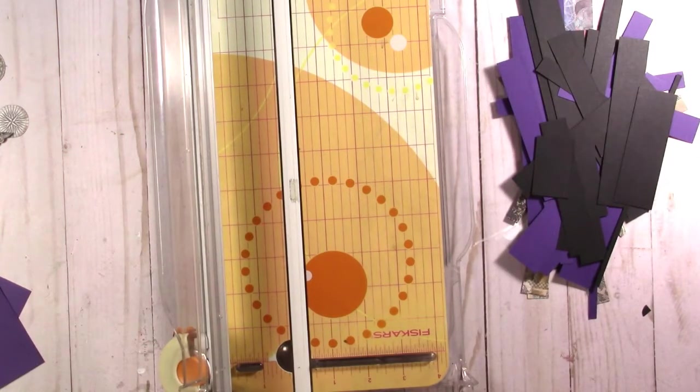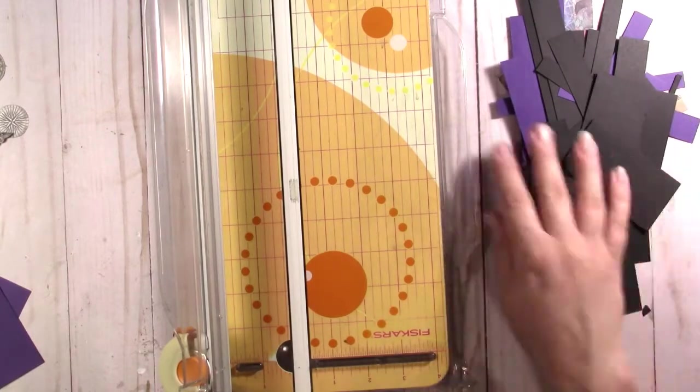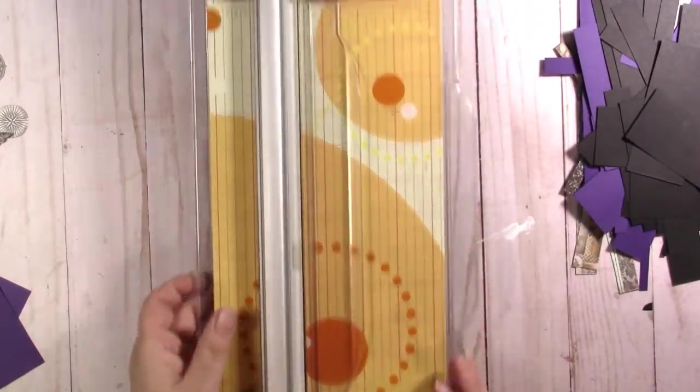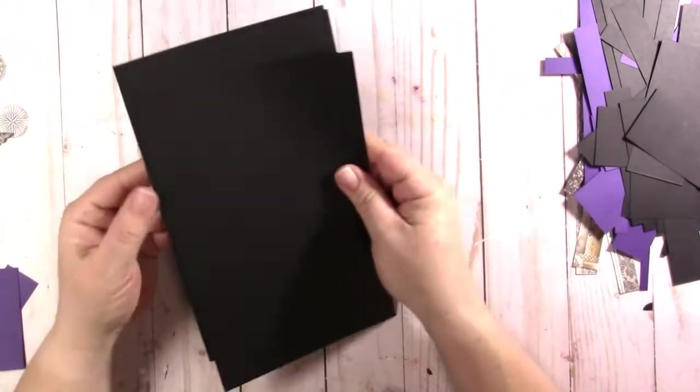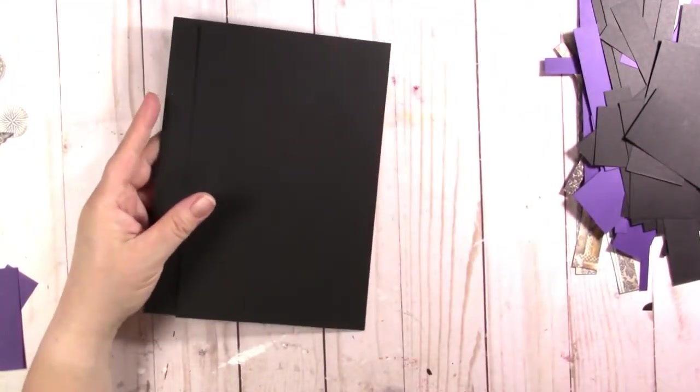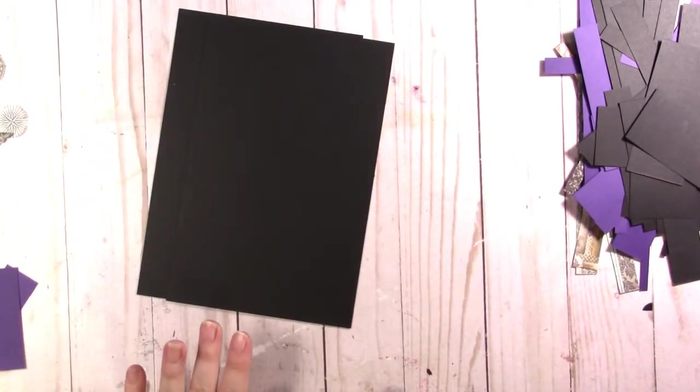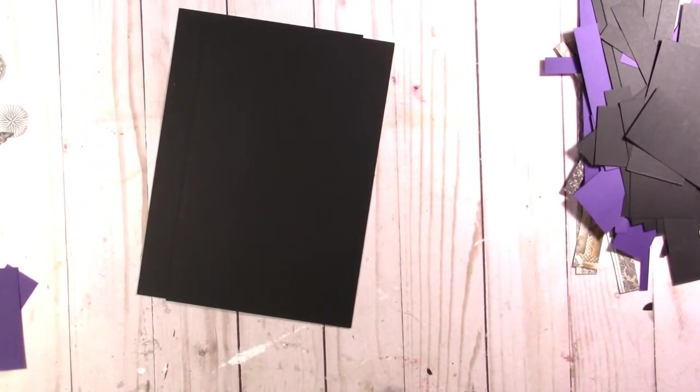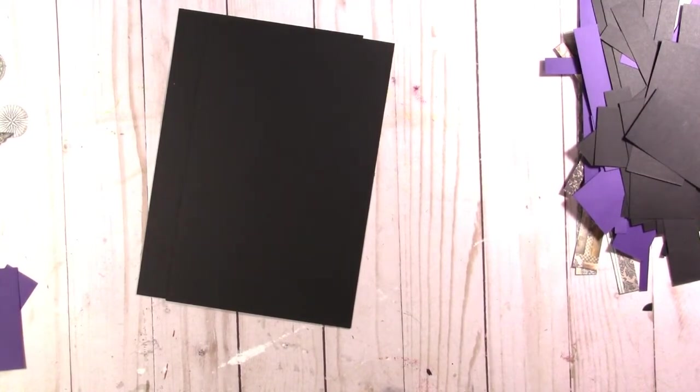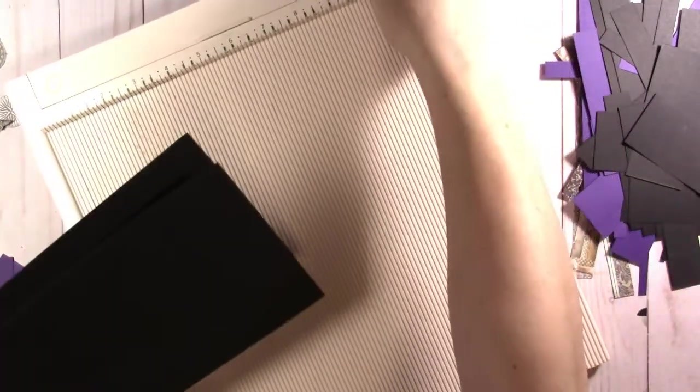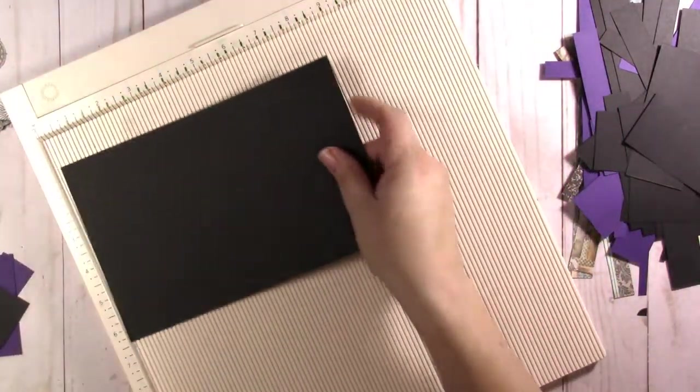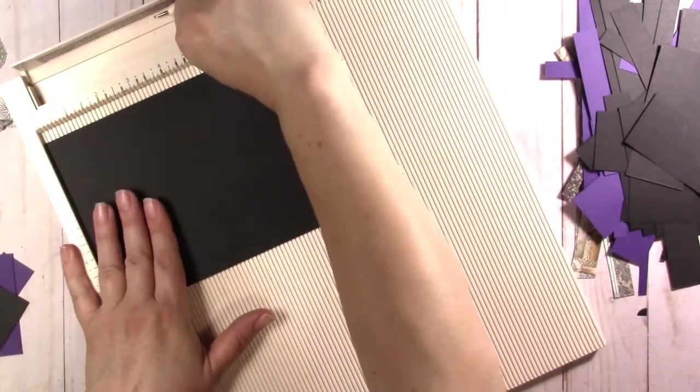I have a different card that I found online. It's not the same as the one Chantelle did, but it's also a paper quilting card. The first thing I did was take two sheets of eight and a half by eleven paper and cut them in half. Now they are eight and a half by five and we're going to score those in half.